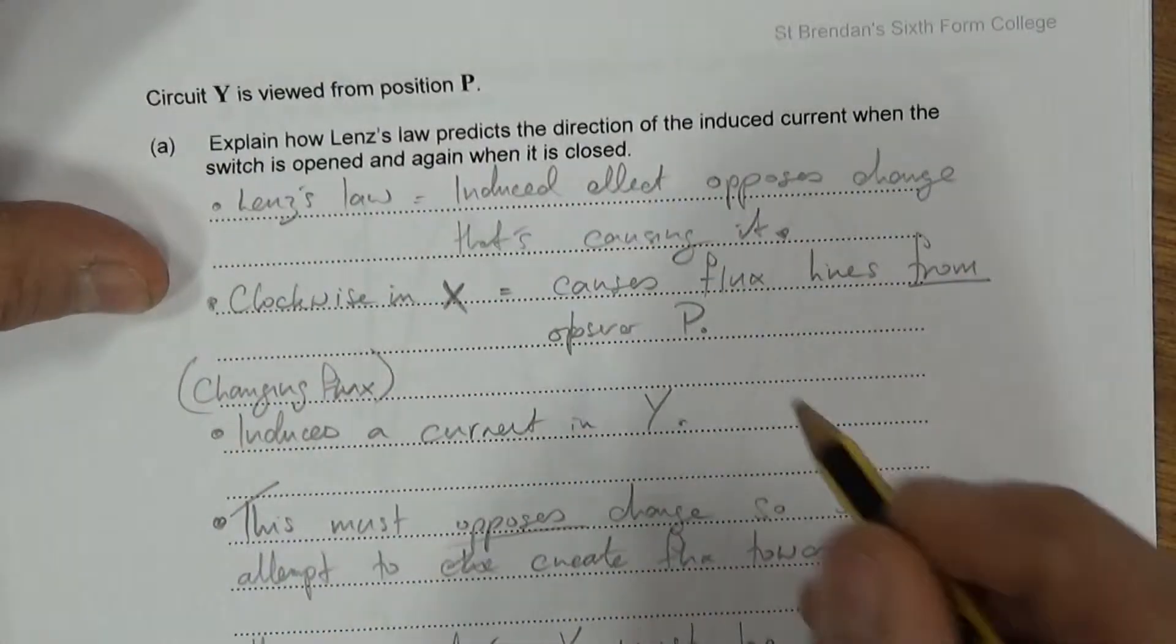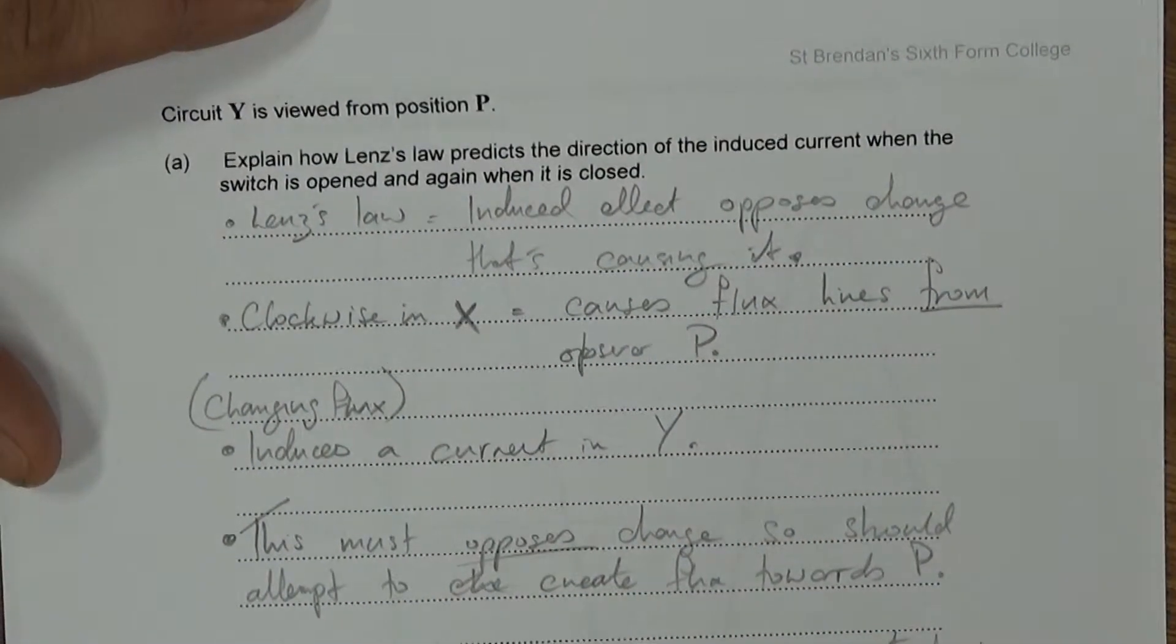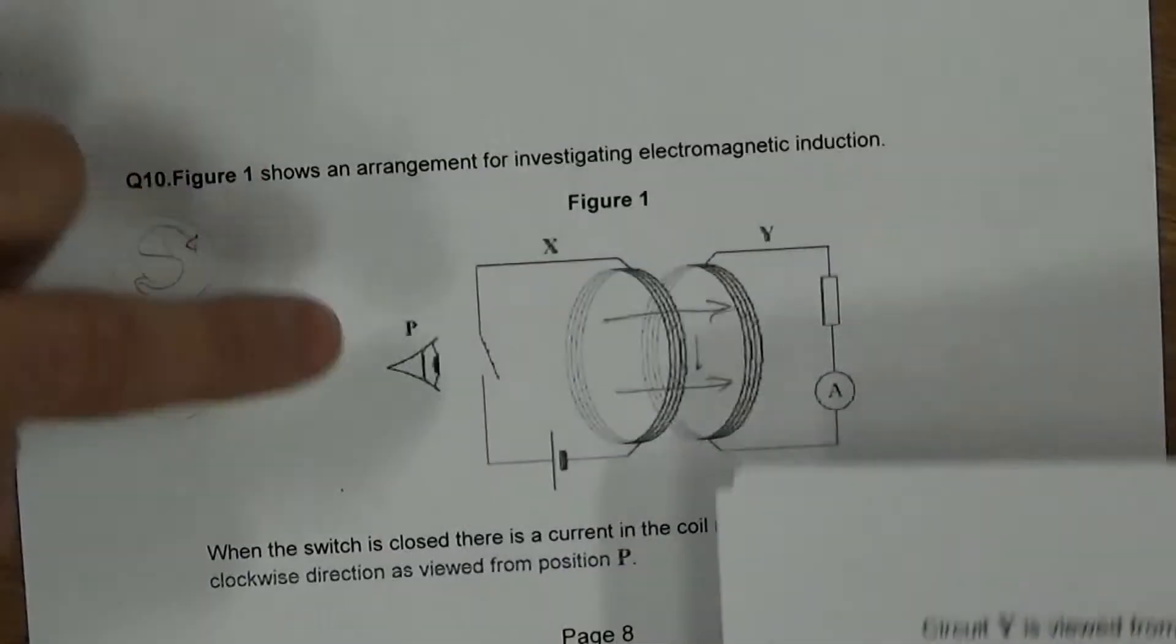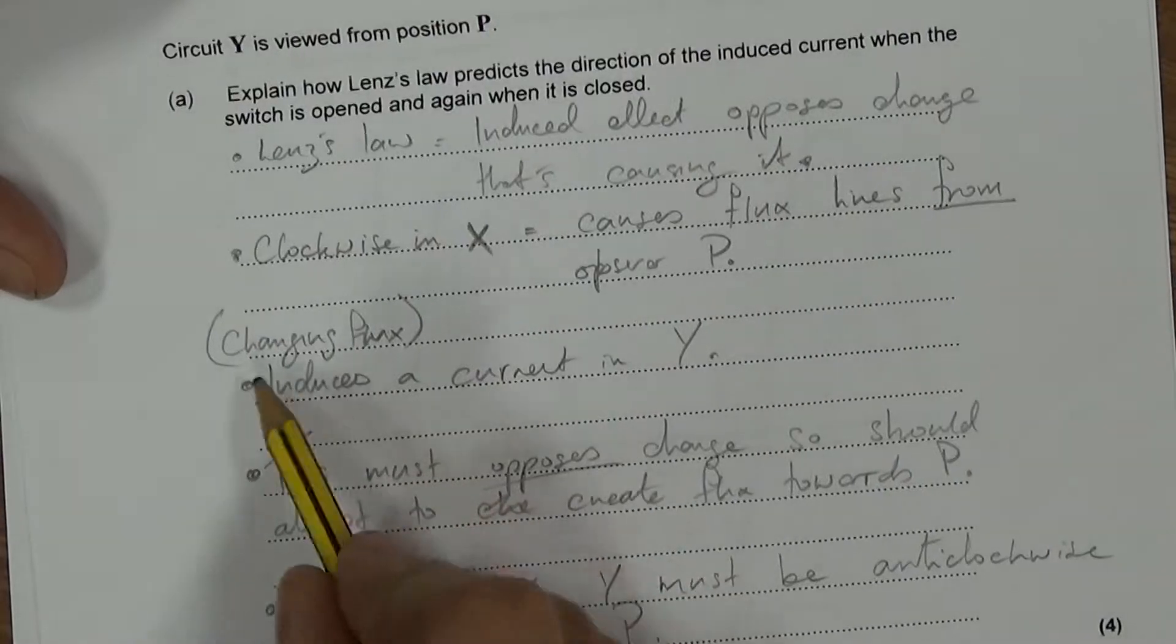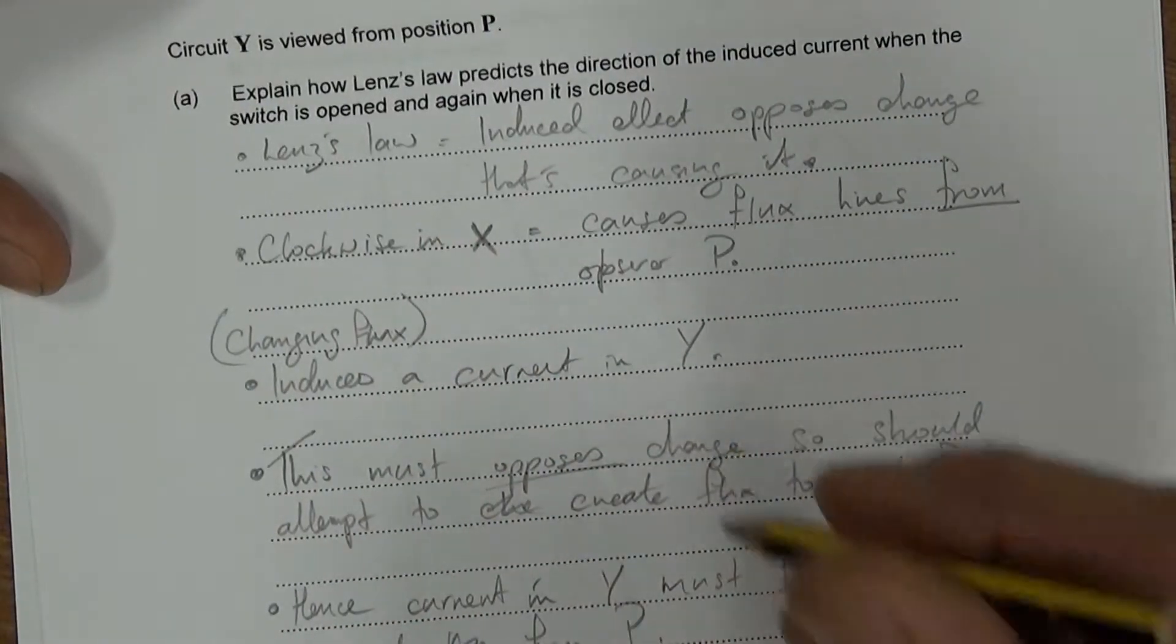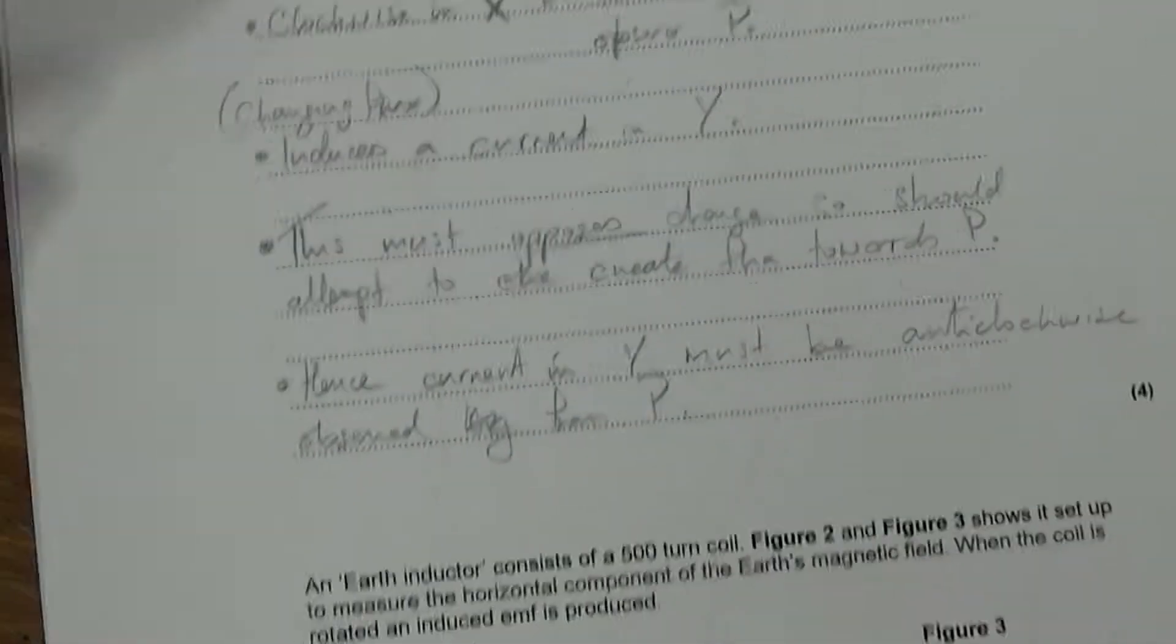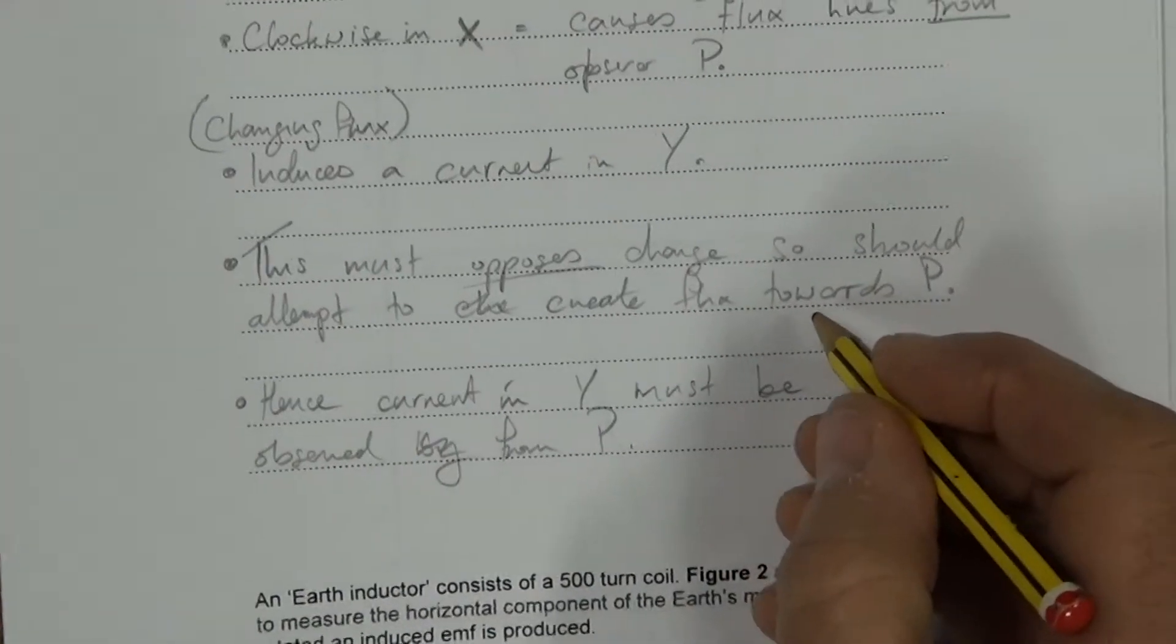In X, it's going clockwise. Therefore, this is going to cause flux lines from observer P. That's what we're going to say they're going that way, as I've just said. There's going to be a changing flux, which is going to induce a current in Y. And this must oppose the change. That's because of Lenz's law.